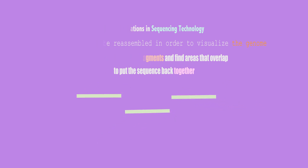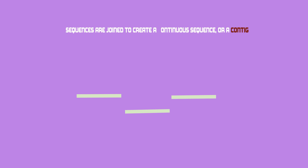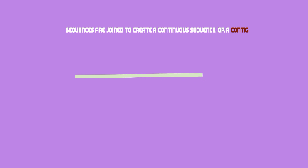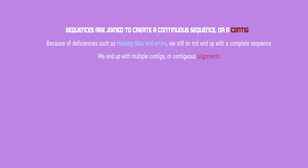When overlaps are detected, sequences are joined to create a contiguous sequence, or a contig. Because of deficiencies such as missing data and errors, we still do not end up with a complete sequence. We end up with multiple contigs, or contiguous alignments.